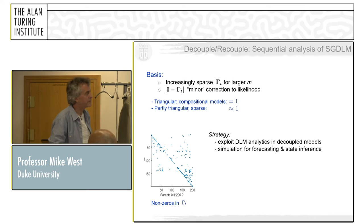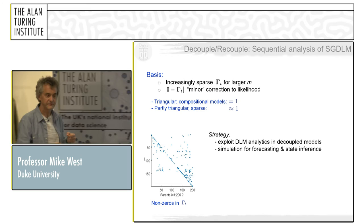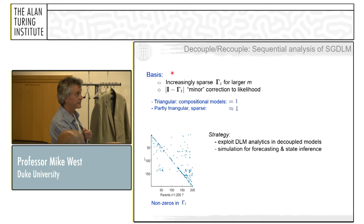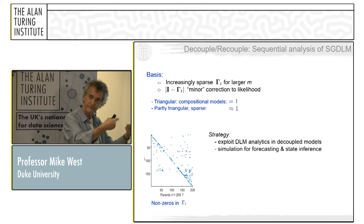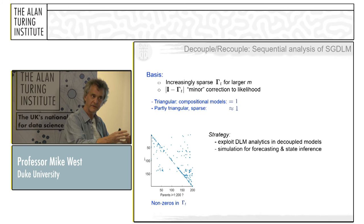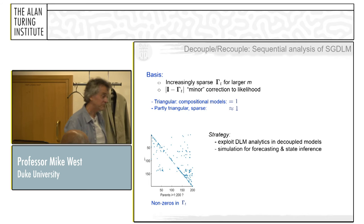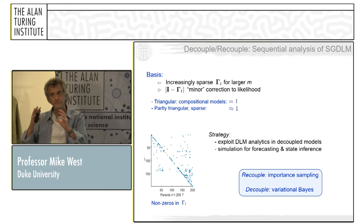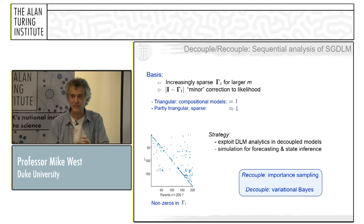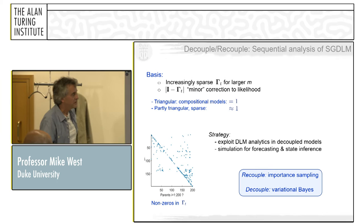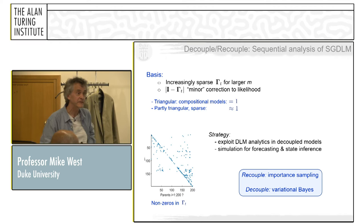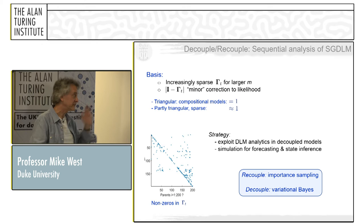So basically we say: if that is the case, this set of decoupled DLMs is going to be a good starting point as an approximation to give you the posterior for tomorrow based on tomorrow's data — it's going to be almost the posterior. Use them, and then you have access to what we have in the triangular case. But then you've got to do probability theory — you've got to take into account the fact that that determinant is not, in fact, 1. We use importance sampling and variational Bayes — in the form of mean field approximation — to do this one-step update.